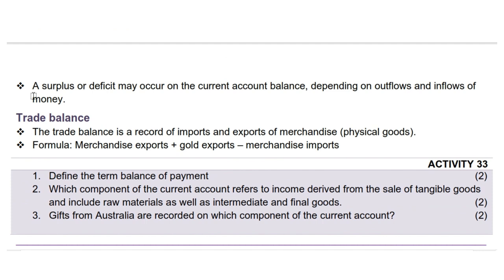Lastly, we will explore the trade balance. The trade balance is a record of imports and exports of merchandise — physical goods. The formula for calculating trade balance is: merchandise exports plus gold exports, minus merchandise imports when imports exceed exports. It is a key component of the current account.